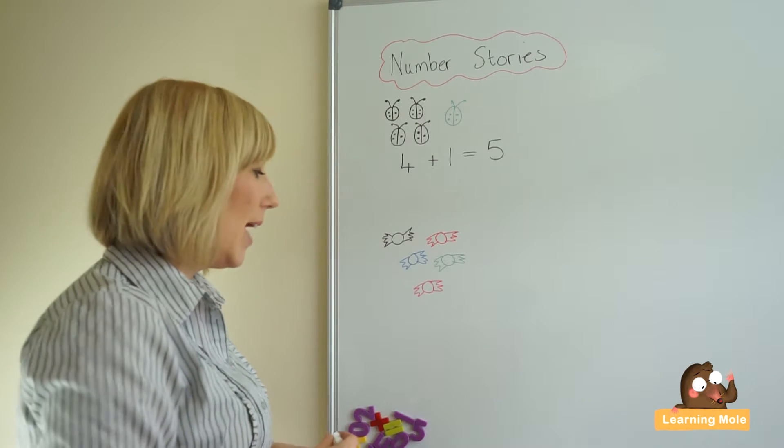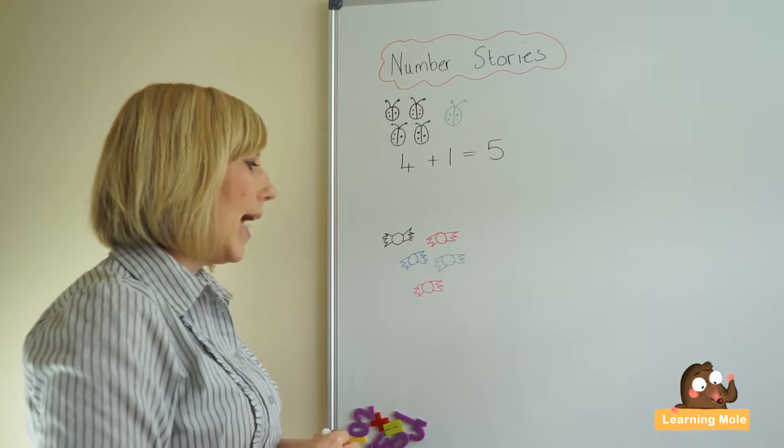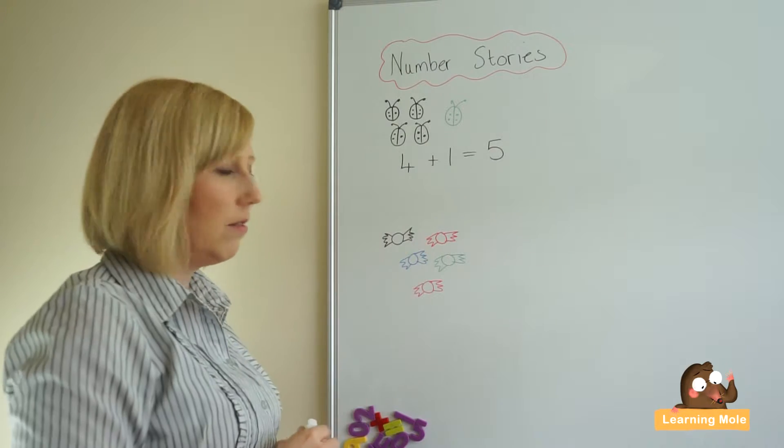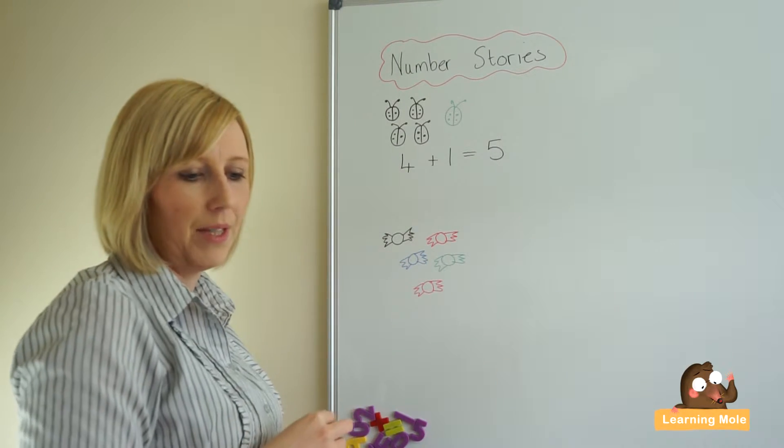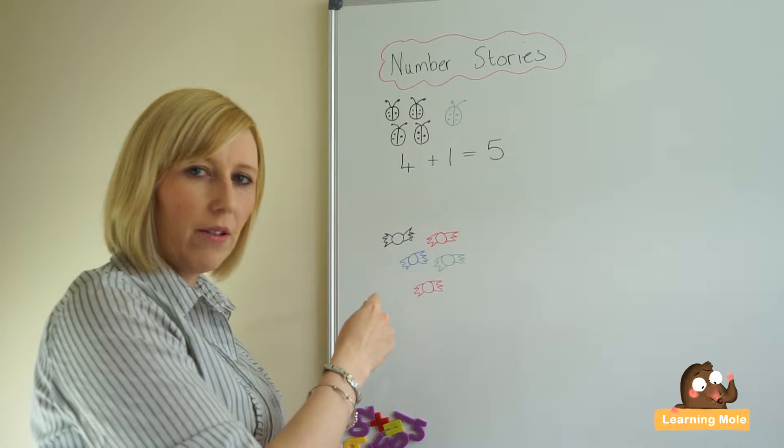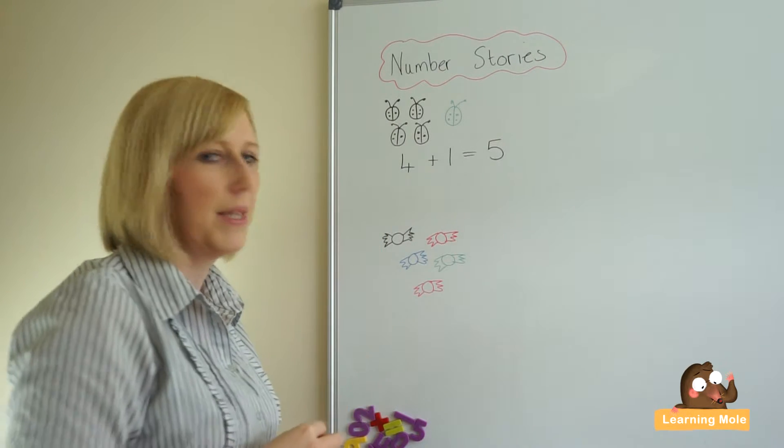I might say I had five sweets, there were two red ones, can you see the two red ones? And there was a green one and there was a blue one and there was a black one. How many sweets did I have all together? I had five sweets in my pocket.